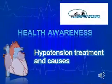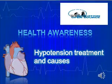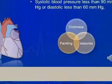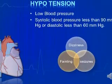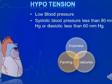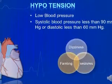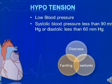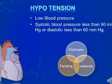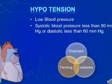Welcome to the video on hypotension. Hypotension is a physiologic state of abnormally low blood pressure. If systolic blood pressure is less than 90 or diastolic less than 60, then hypotension exists.